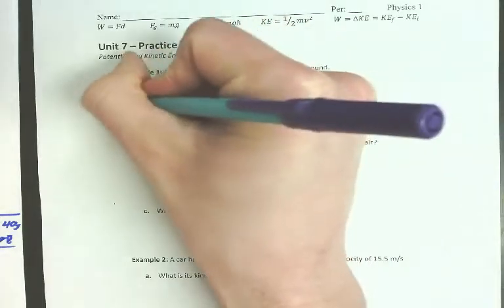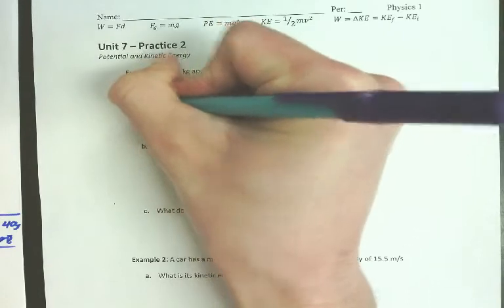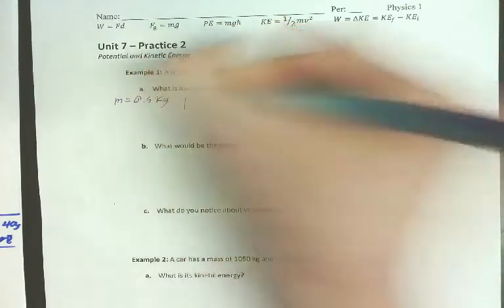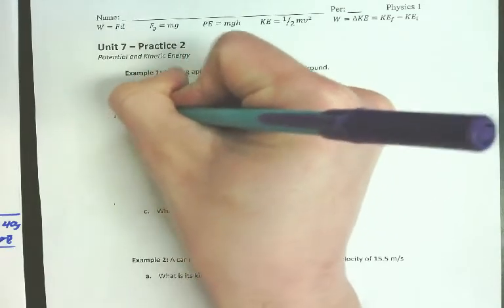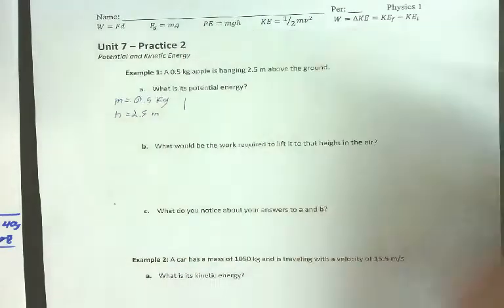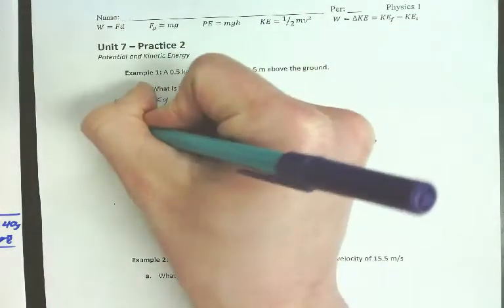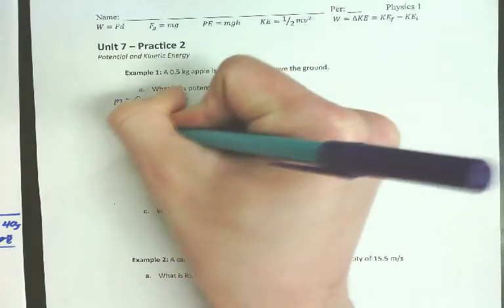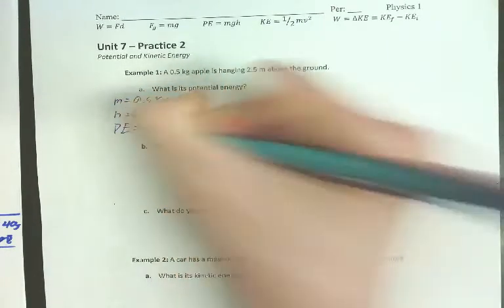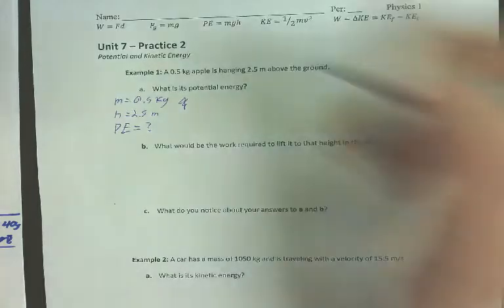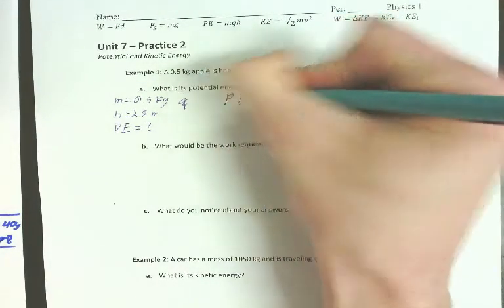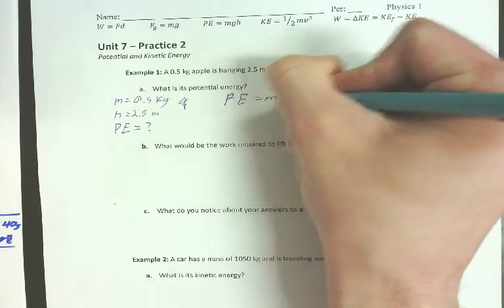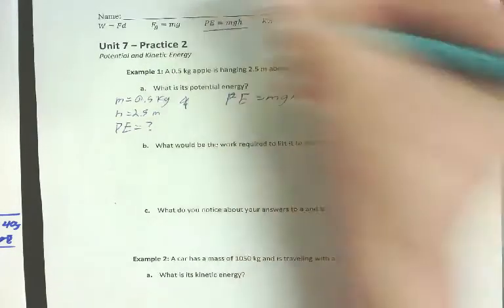So we're given a mass, 0.5. We're given a height, 2.5 meters. I want to know what the potential energy is. So, PE equals MGH. There's the equation.